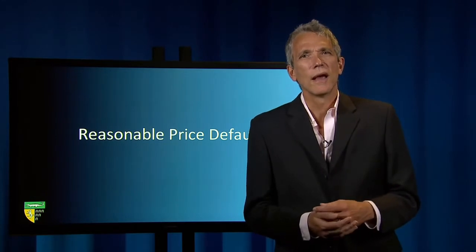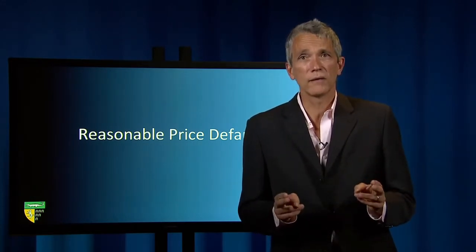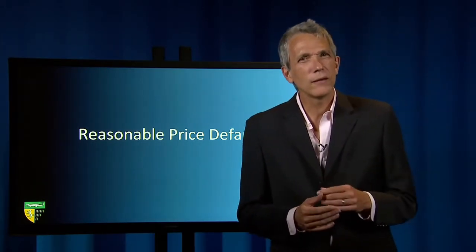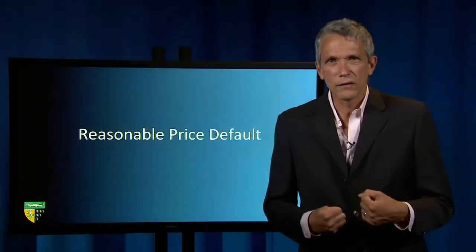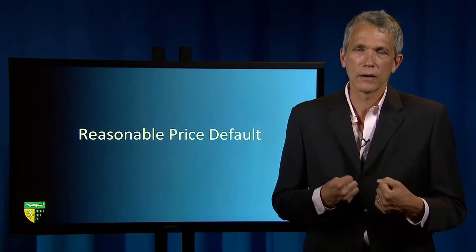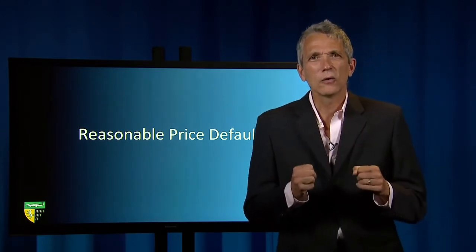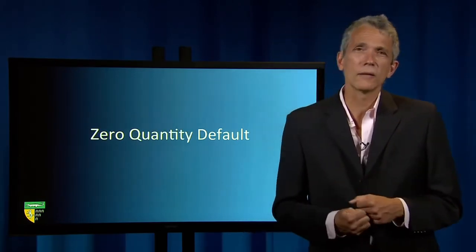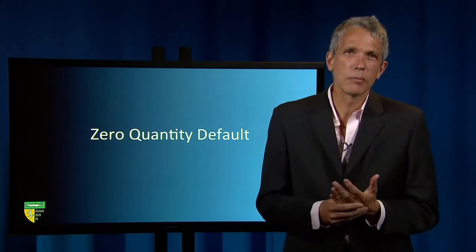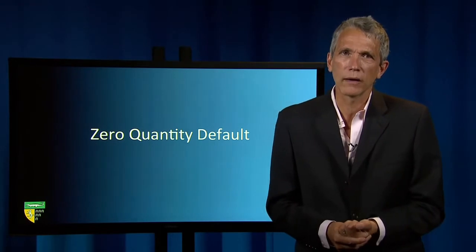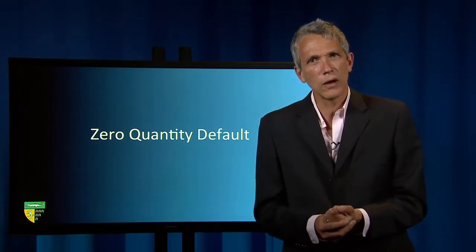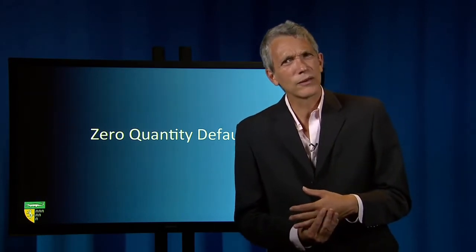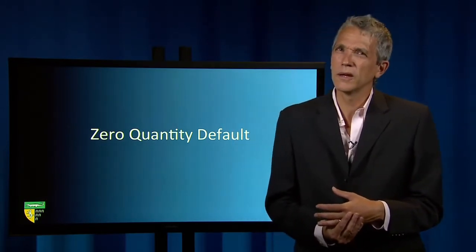The Uniform Commercial Code has adopted the standard-like reasonable price default via UCC Section 2-305. But instead of using a more rule-like default to cover instances where a contract fails to mention contract quality, the default quantity under the UCC is effectively zero — more of a rule than a standard. If your contract fails to name a price, contract law assumes you want a reasonable price. If your contract fails to mention quantity, contract law assumes you want to trade zero items. Why would the law choose a standard to govern default price but a rule to govern default quantity?